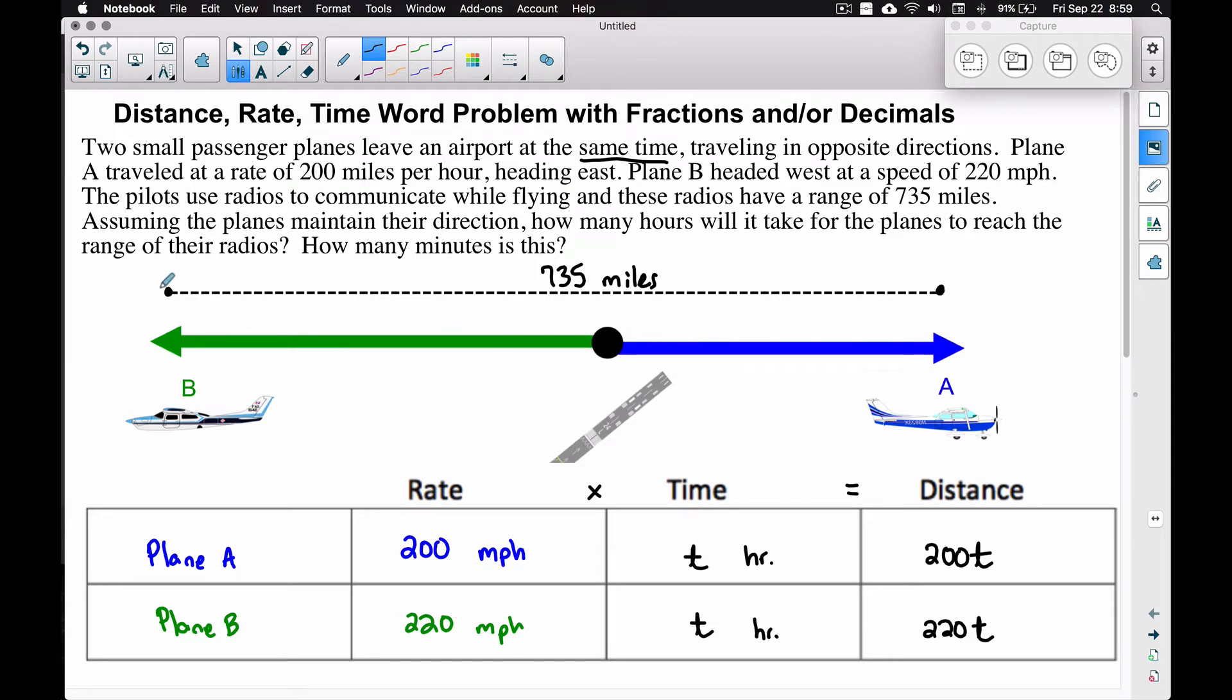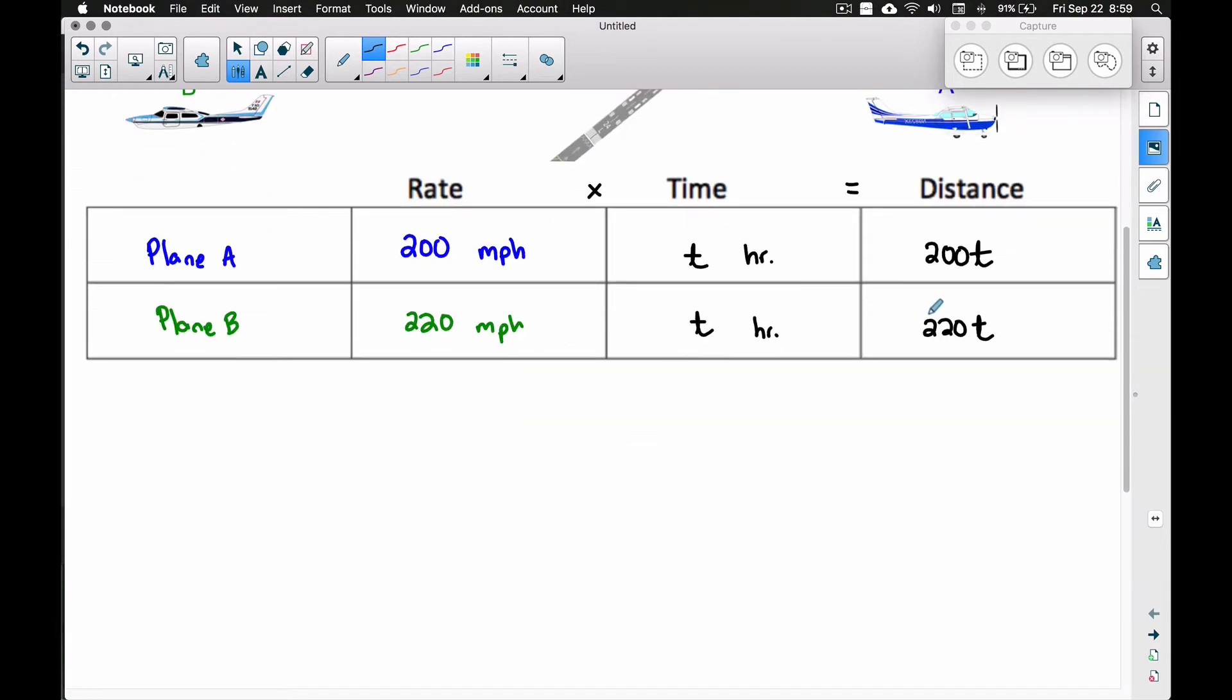Notice I said sum, therefore our equation is going to be: we want to take the distance that Plane A traveled, 200t, plus the 220t. We're adding these two distances together, and we're going to set it equal to the range of those radios, 735. From here we can combine like terms. We have 420t equals 735.